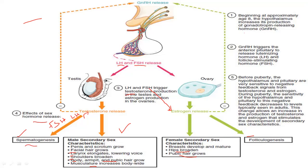Before puberty, the hypothalamus and pituitary are very sensitive to negative feedback. During puberty, the sensitivity of the hypothalamus to negative feedback decreases. Remember: if FSH is high, then LH will also increase. This is a positive relationship. However, negative feedback means if LH is high then FSH is low, and if FSH is high then LH is low — these two hormones regulate each other.